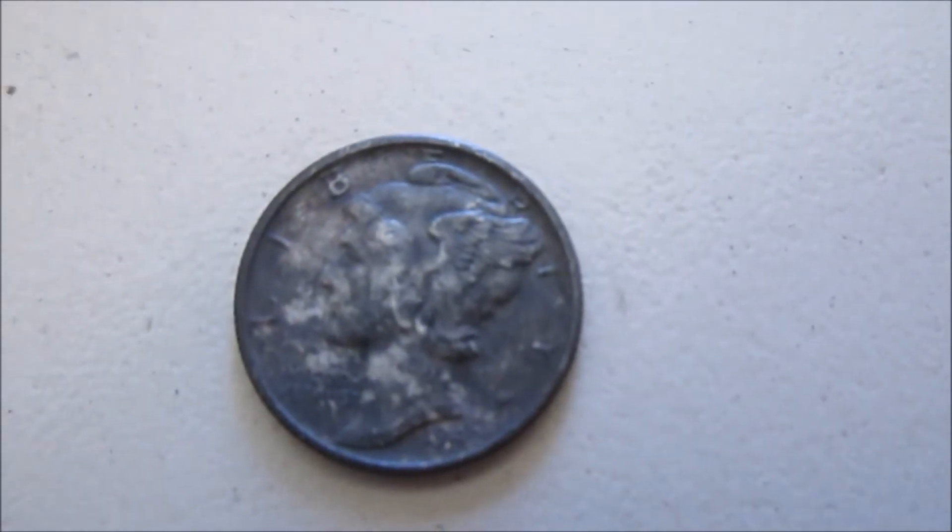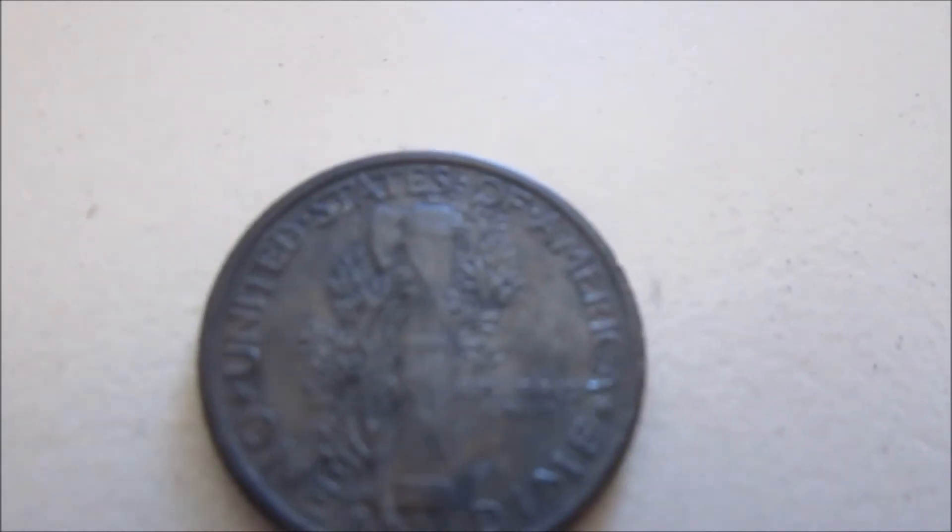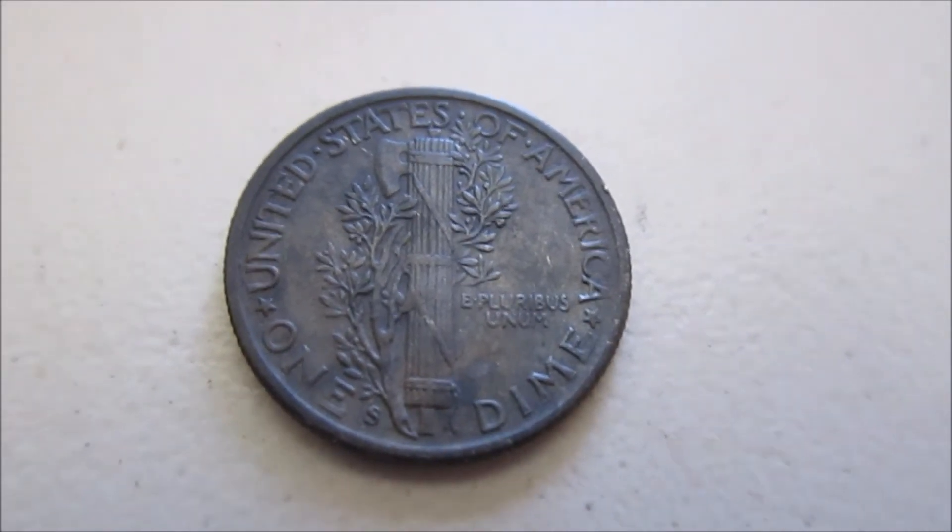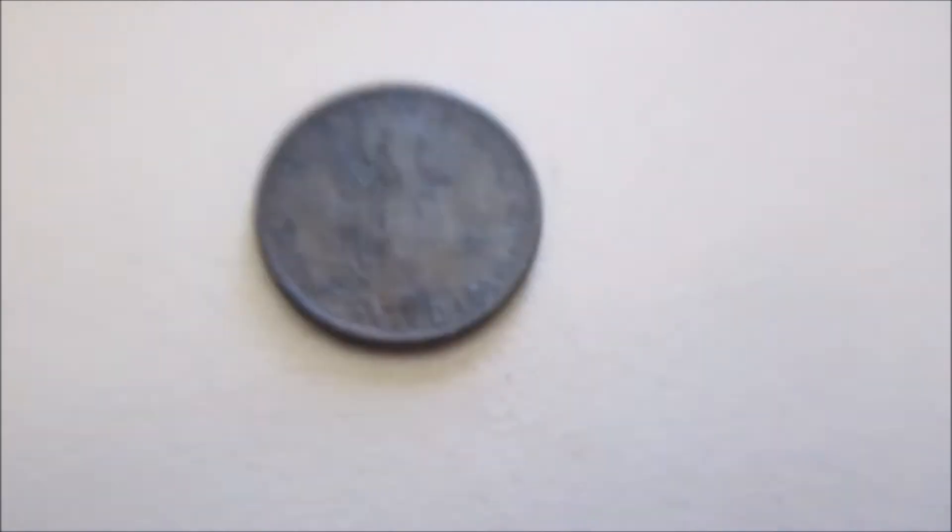And my find of the day, a 1942 Mercury dime. It's an S mint mark. It's got real nice bands on it. Yeah, that's my find. Was really happy with it.